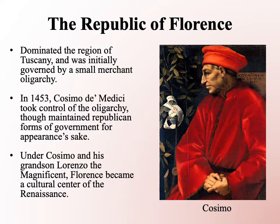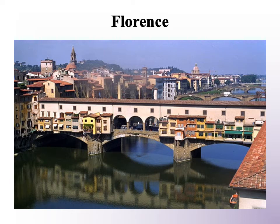The Republic of Florence dominated the region of Tuscany, governed by a small merchant oligarchy, but one wherein one family in particular would be extremely dominant: the Medici family, starting with Cosimo de' Medici, who in 1453 took control of the oligarchy. They maintained a Republican form of government for appearance's sake, with elections and other individuals part of the governing structure, but pretty much everyone taking their lead from the Medici family. They are probably most famous for being the biggest patrons of Renaissance art and turning Florence into the cultural center of the Renaissance.